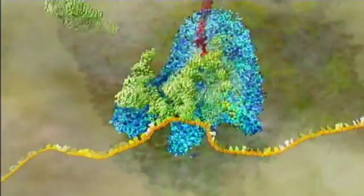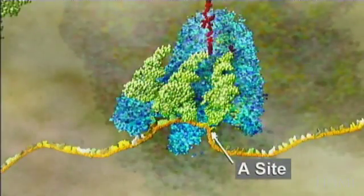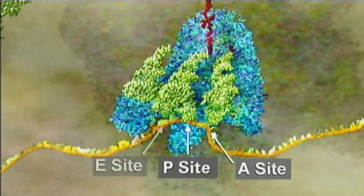There are three locations inside the ribosome, designated the A site, the P site, and the E site.